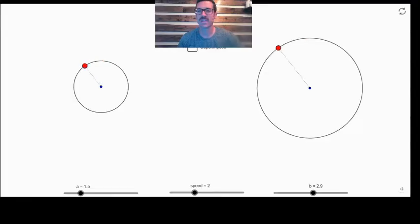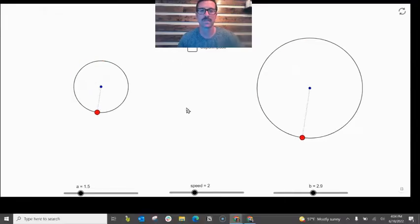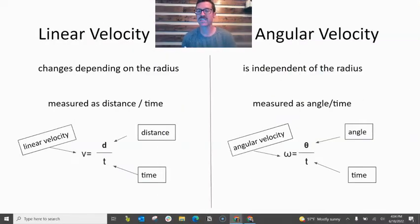So if we bounce back to our definition, I think it will make a little more sense now. Angular velocity is independent of the radius. It doesn't matter how big your circle is, it's just however many degrees you change in a given set of time. Both of these went 360 degrees in the same amount of time, so both circles had the same angular velocity. However, that larger circle traveled a greater distance in the set amount of time, so it had a greater linear velocity.